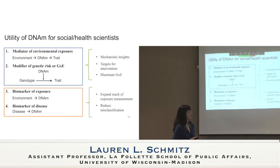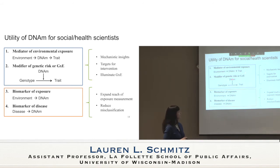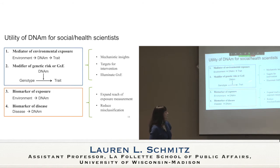What is the utility of DNA methylation for social or health scientists? One model is that it's a mediator of environmental exposure — some environmental shock like lead exposure changes DNA methylation patterns, which then influences gene expression and the trait of interest. It could also be a modifier of genetic risk or of gene-by-environment interactions, where nearby DNA methylation modifies the strength of associations. Just based on these models, we can get mechanistic insights from studying DNA methylation, think about targets for intervention, and illuminate gene-environment interactions.